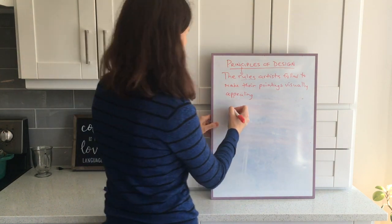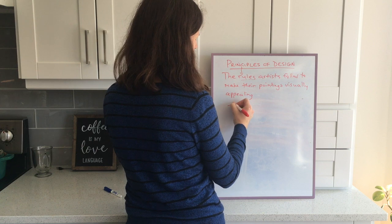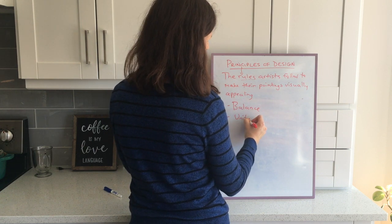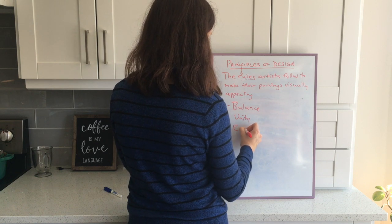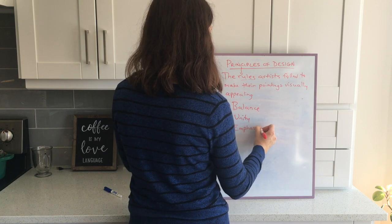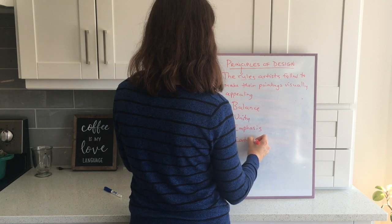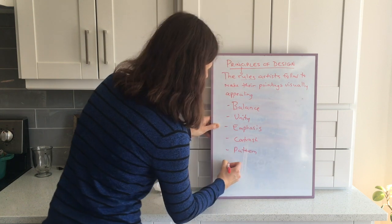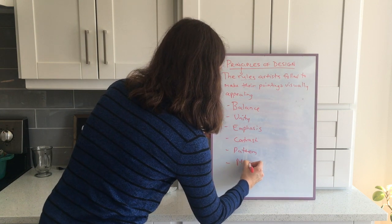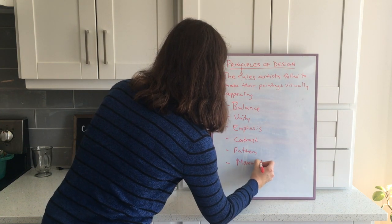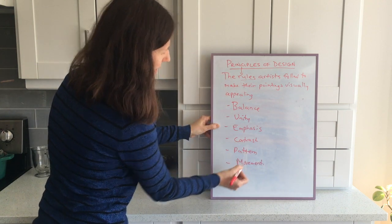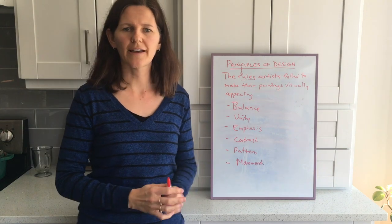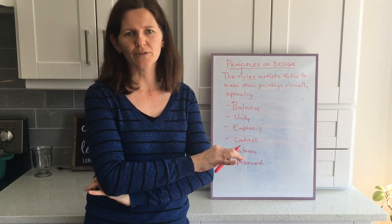There are six principles of design, and you're going to have to know what they are. They are balance, unity, emphasis, contrast, pattern, and movement. Get these down, and then we're going to have a little bit of time where I explain each of the principles, and there will be images for you to look at while I explain them.